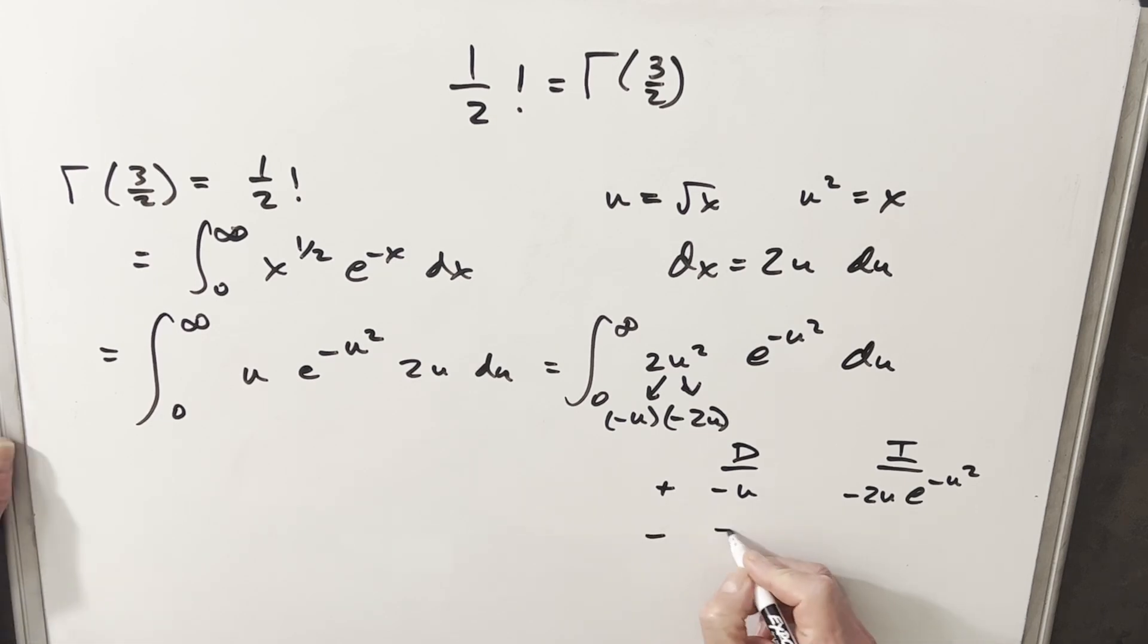Then I'm going to take my derivative of minus u. It's just going to be minus 1. Integrating this, like I said, you could do a quick substitution. We could do a quick t substitution. But I think we can just do that integral in our head and see that this integral is going to be e to the minus u squared.